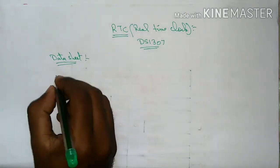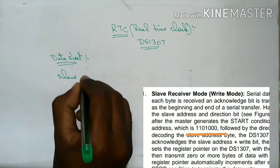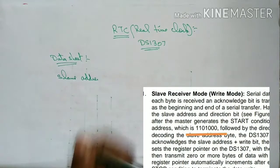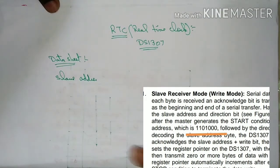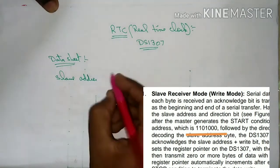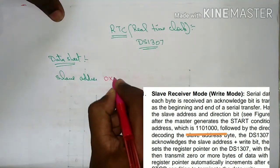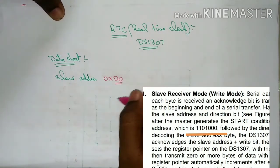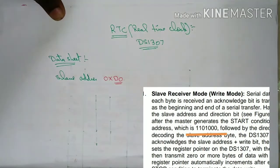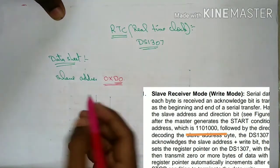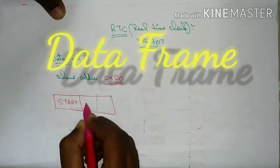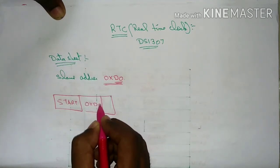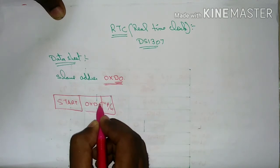First, there is a slave address. If you need to save this and want to use it, you will need to create a slave address. If you want to use it, you will need to know the slave address. Here we have to write the difference.